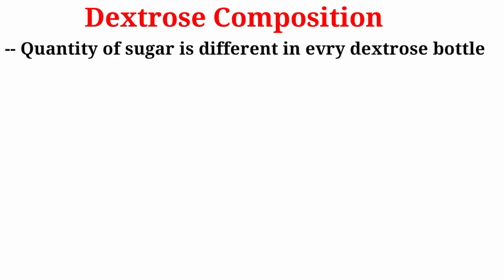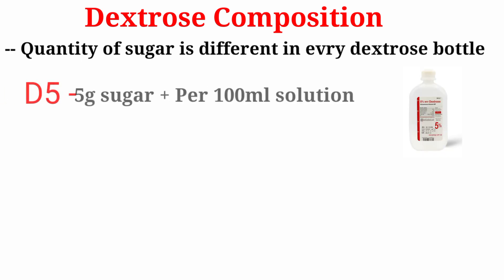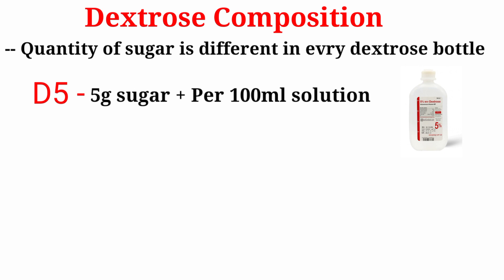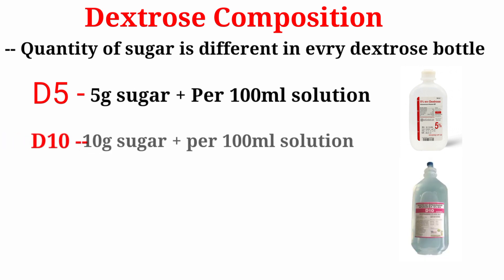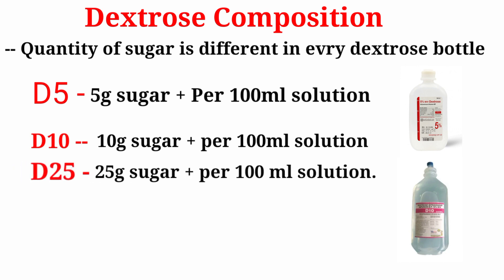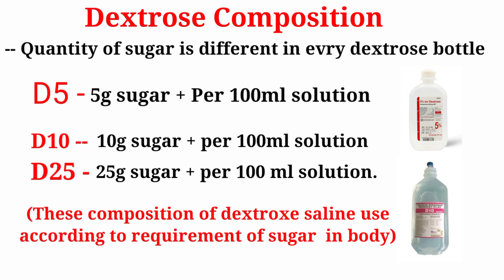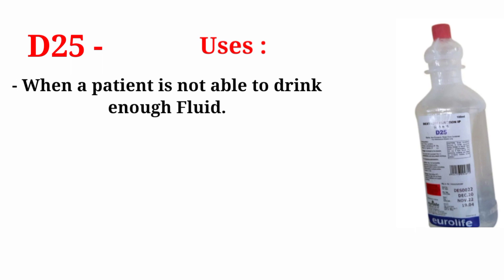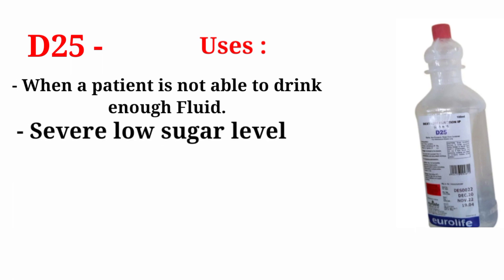Now regarding dextrose: the quantity of sugar differs in every dextrose bottle. D5 contains 5 gram sugar per 100 ml; D10 contains 10 gram sugar per 100 ml; D25 contains 25 gram sugar per 100 ml. The composition is used according to the body's sugar requirement. D25 is used when a patient cannot drink enough fluid or in cases of severe low blood sugar — it is used in emergencies only.